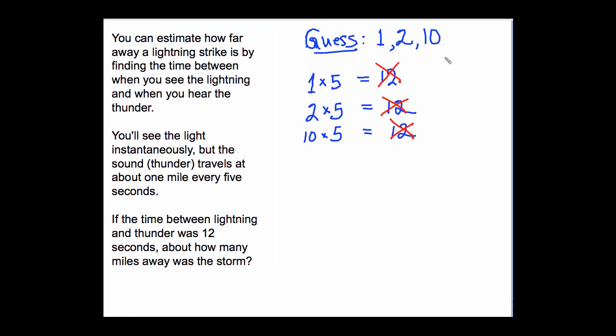Now, let's guess x miles. Well, if we look at our computations, we took the miles, we multiplied it by 5, and that should equal 12. Well, now we have our equation. 5x equals 12.